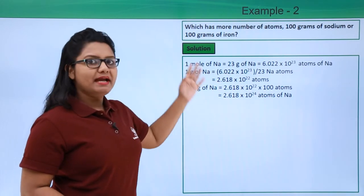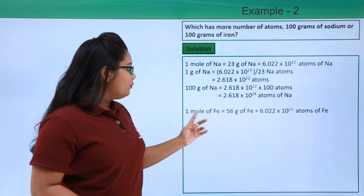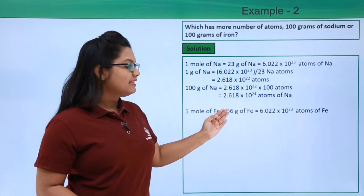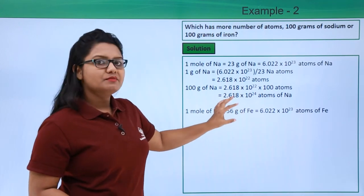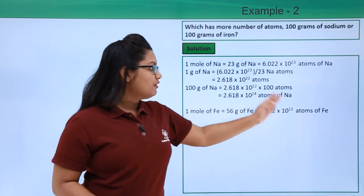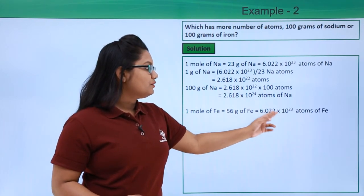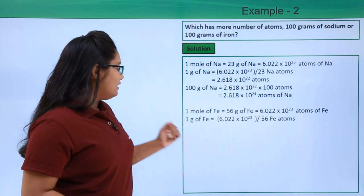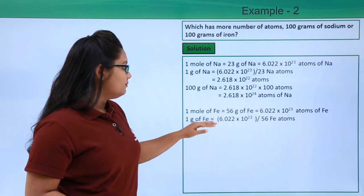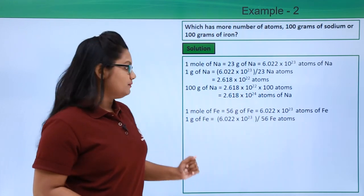Now let's do the same calculation for iron. We know that 1 mole of iron has 56 grams of iron in it, and this 56 grams of iron has the Avogadro number of atoms of iron, which is 6.022 × 10^23 atoms of iron. Therefore, 1 gram of iron must be having this number divided by 56 iron atoms.